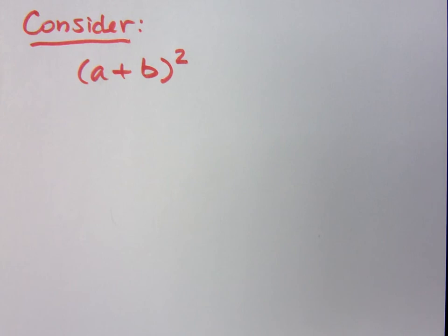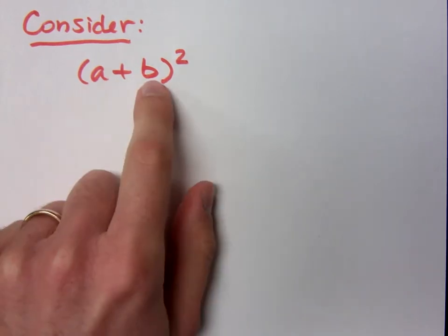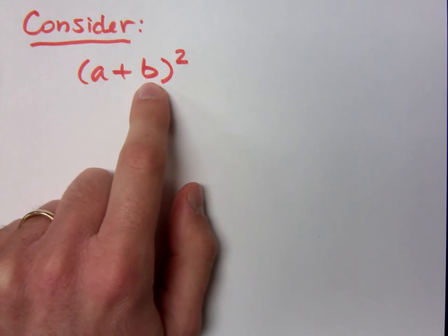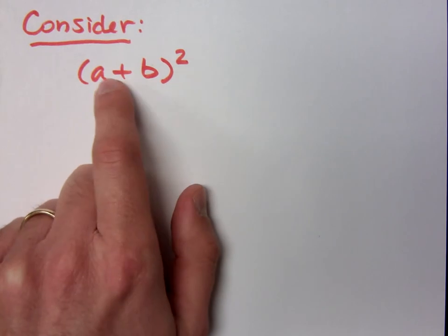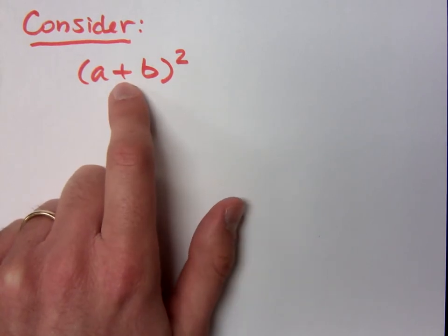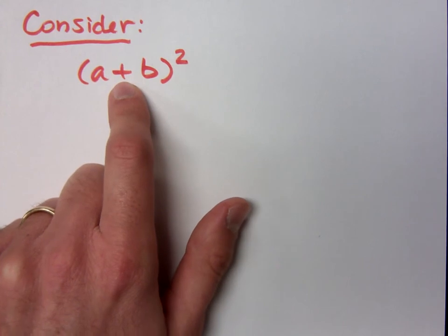I can tell you right now what this isn't. You are not allowed to square each of these pieces. We had problems earlier today where you raised everything inside to that particular power, but remember, that was when you had a product, when there was multiplication to a power. Is this multiplication? This is addition, so rules are a little bit different here.